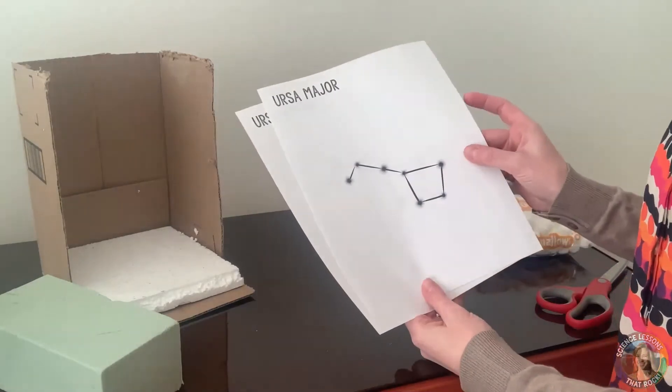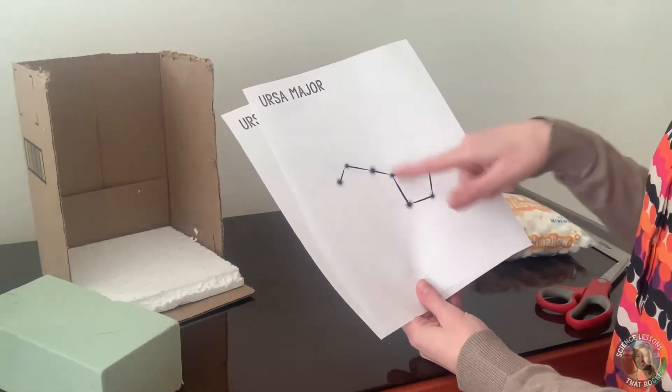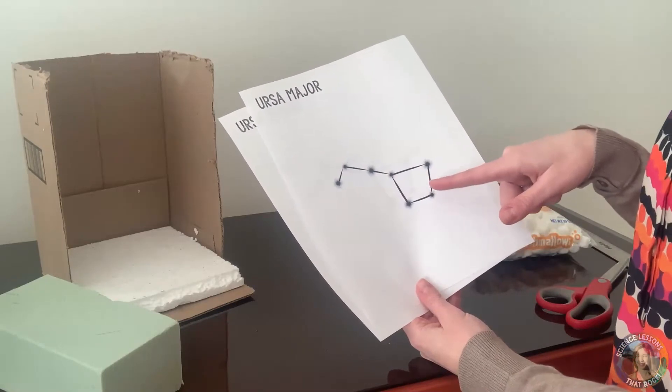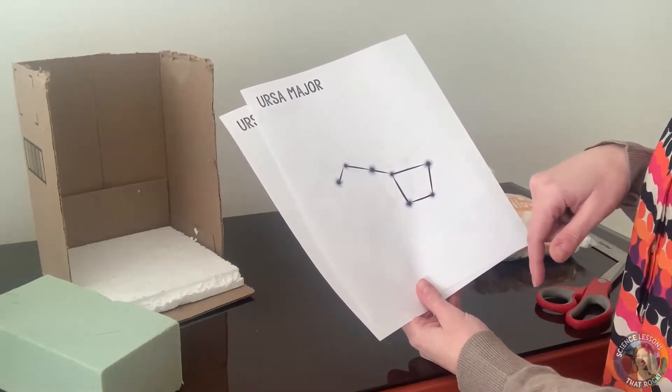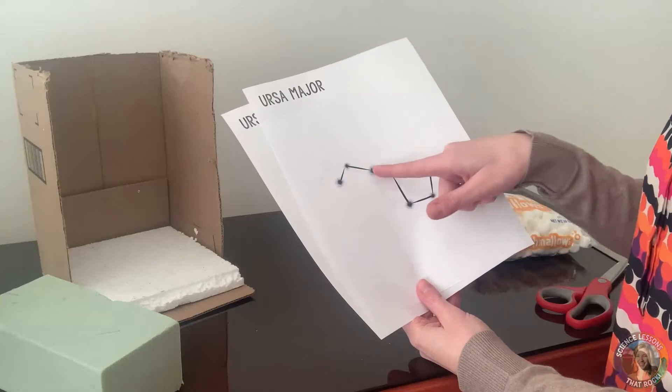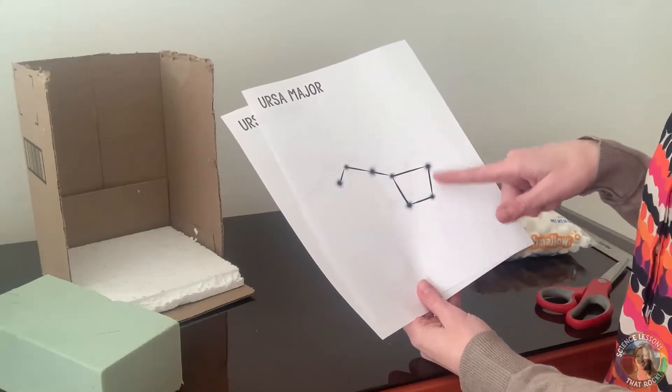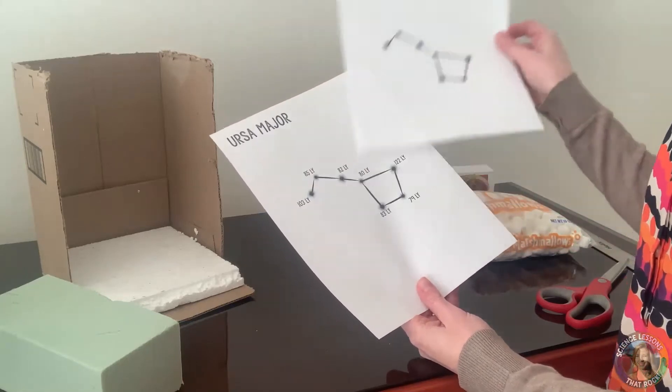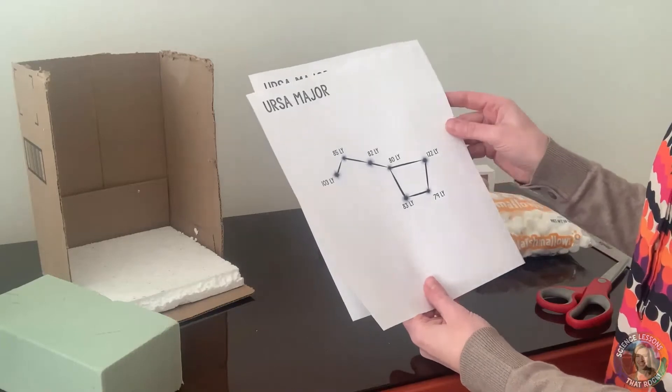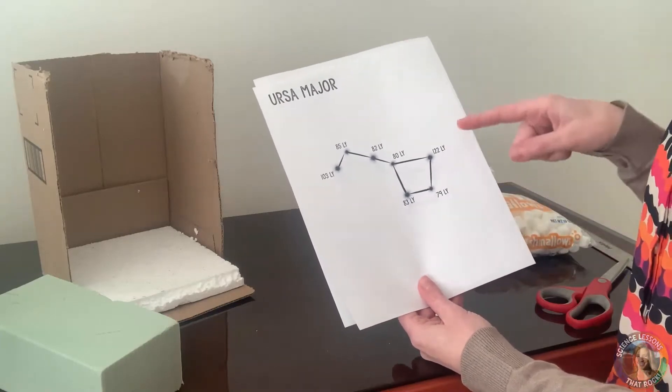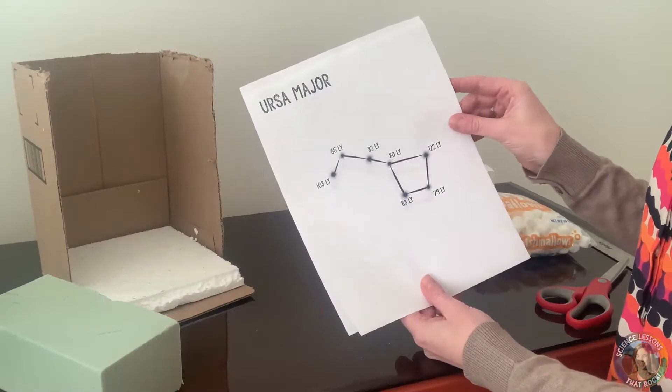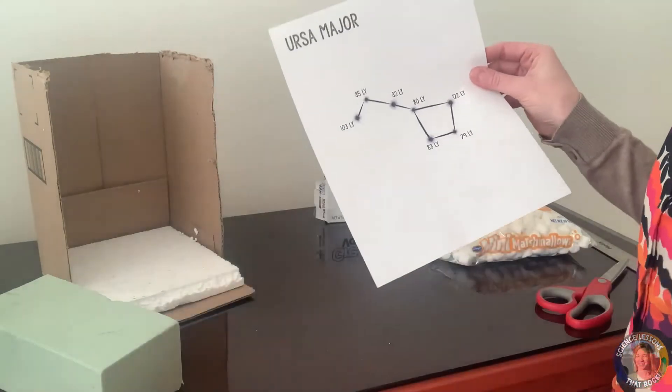So if you teach older students you can give them the version that's blank and they can go online. Stellarium.org is a great website to use to look up each of the stars and how many light years away they are from Earth. If you have SPED students or maybe you teach middle school and you'd rather just give the students the numbers, then this version is available as well. So I'm going to use this one as a demo.